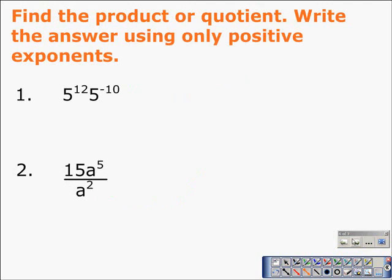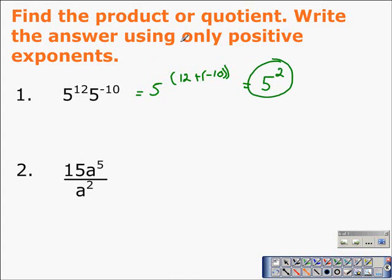We want to find the product or quotient and write the answer using only positive exponents. We apply the product of powers rule for expressions with the same base — in this case five — so that becomes 5 to the twelve plus negative ten power. Twelve plus negative ten is positive two, so the answer is 5 to the second power. In the next case, we apply the quotient of powers rule: dividing powers with like bases means we subtract exponents, so 15a^5 divided by a^2 gives us 15a to the third power.